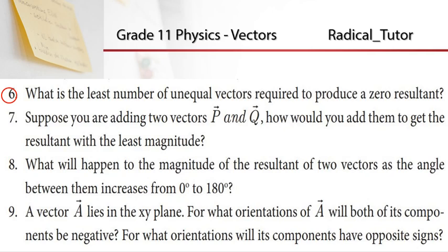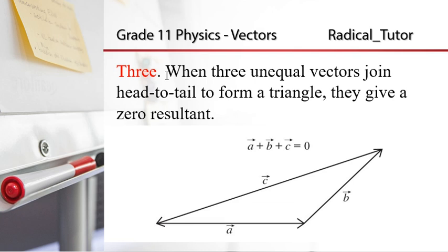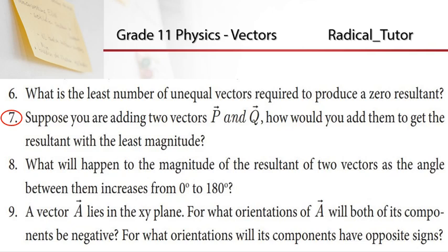Is the least number of unequal vectors that give a zero resultant? If you have to choose the least one, you will add the least number of vectors. We will create the least number of vectors. So let's see.